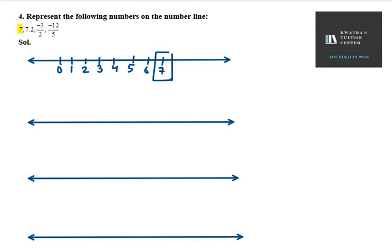Next is 7.2. Now 7.2 will lie between 7 and 8. Now how much gap should be? It should have 9 pointers. 1, 2, 3, 4, 5, 6, 7, 8, 9. Now this is 7.2. So mark this point.